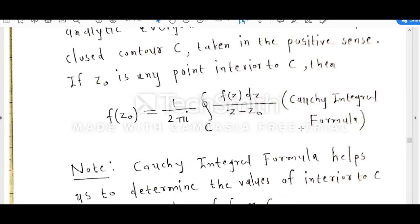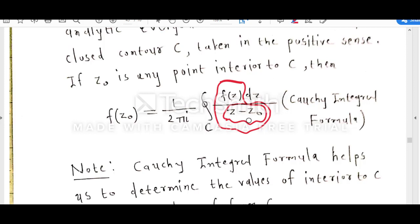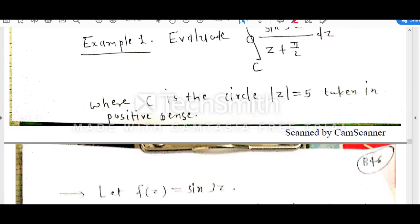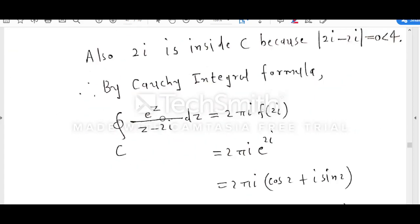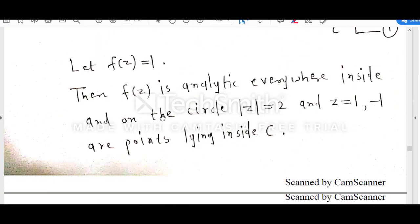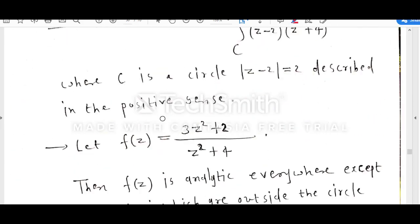To apply Cauchy integral formula, the function which we want to integrate must be written in the form where in the denominator we have z minus z₀, and the power of z minus z₀ is 1. Now, what if the power of z minus z₀ is more than 1? For that we have the extension of Cauchy integral formula.